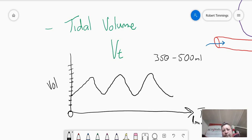It's like yoga. So 350 to 500 mils is your normal tidal volume. It's calculated by having a look at lean body weight. So we use the calculation of roughly 5 to 8 mils per kilo.